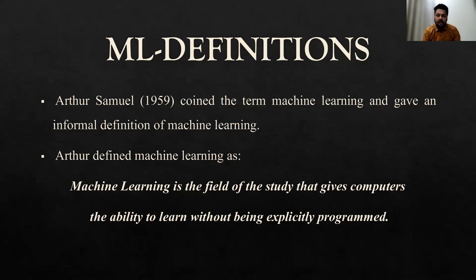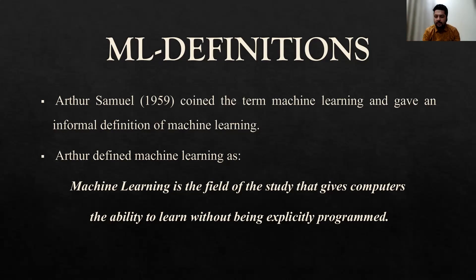The way we can code for a prime number or Armstrong number, we cannot do the coding for face recognition, because no one's face is exactly the same — unless they are twins. The faces are not the same and we cannot code that, if this value comes then it is a face and if this value comes then it is not a face. There is a lot of complexity.